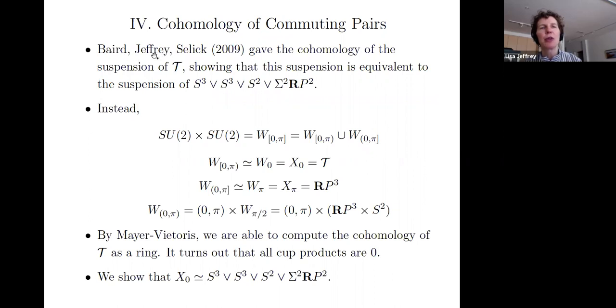So, together with Tom Baird and Paul Selick, we gave, we identified the cohomology of the suspension of the space of commuting pairs showing that the suspension is equivalent to the suspension of this wedge product. In fact, SU(2) cross SU(2) is the space W_(0,pi), so these level sets.